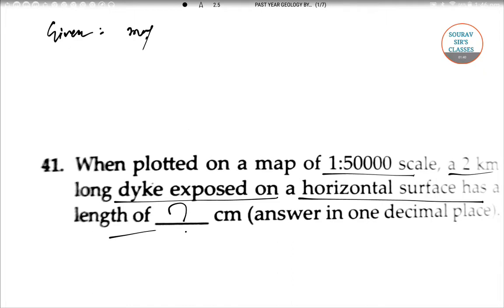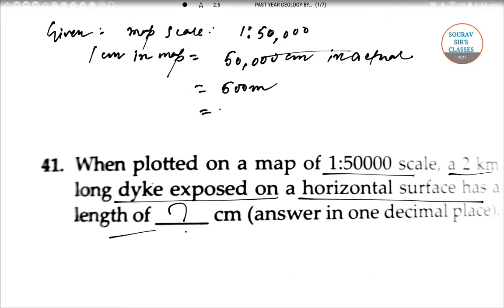Given: The map scale is 1:50,000. That means 1 centimeter in map is equal to 50,000 centimeter in actual. 50,000 centimeter equals 500 meters, which equals 0.5 kilometers. So 1 centimeter on map equals 0.5 kilometers in real.